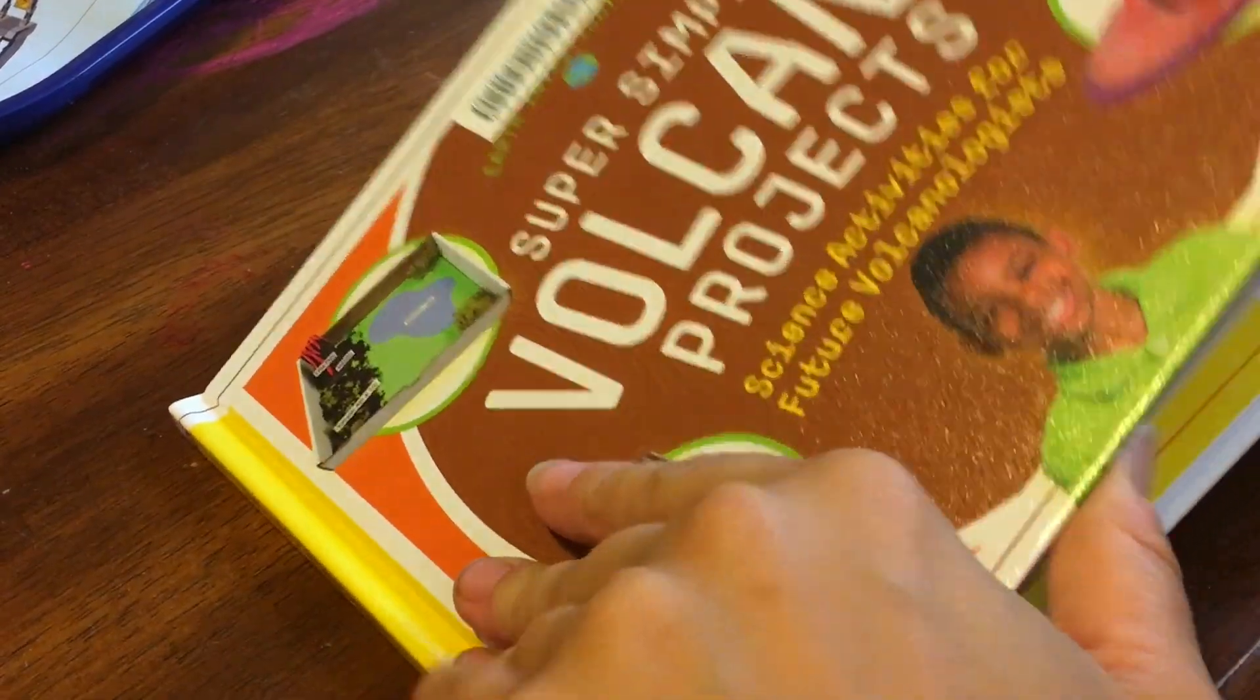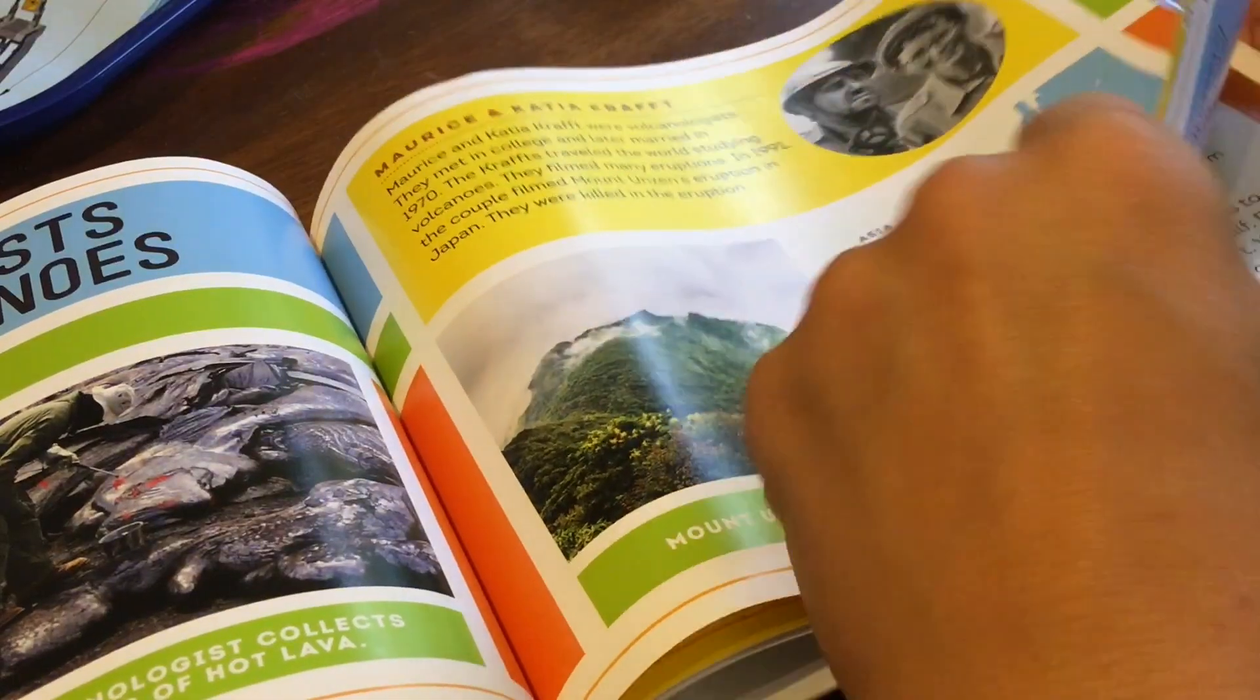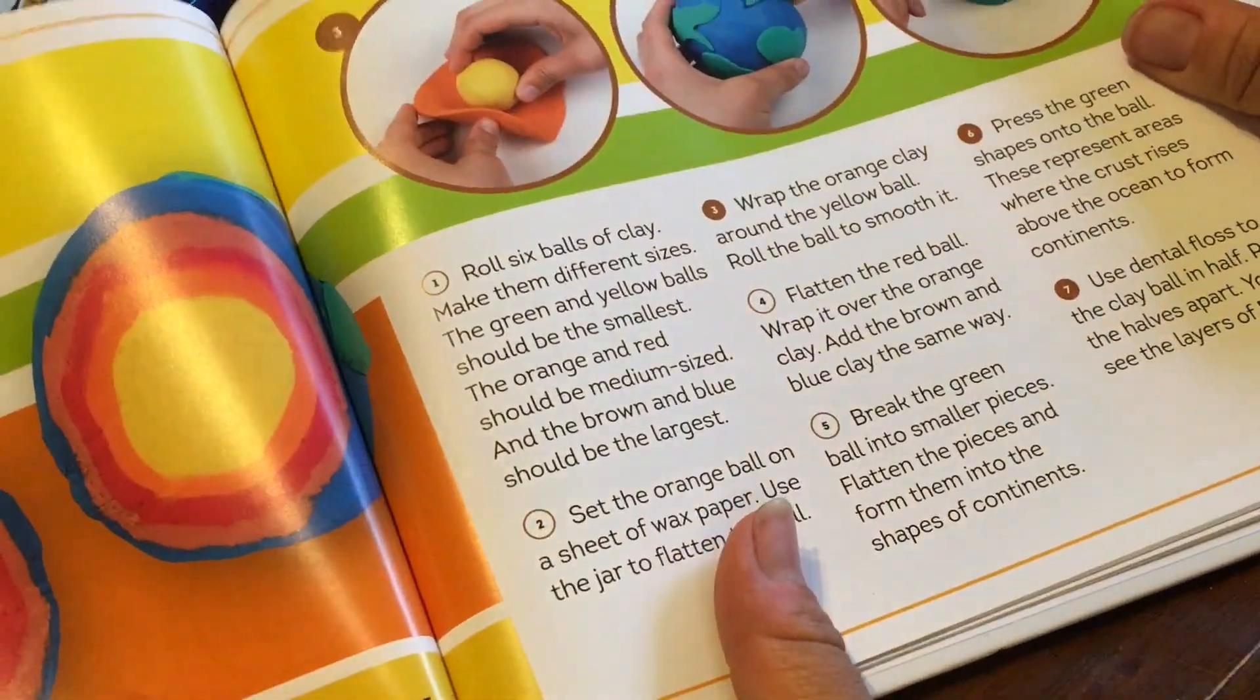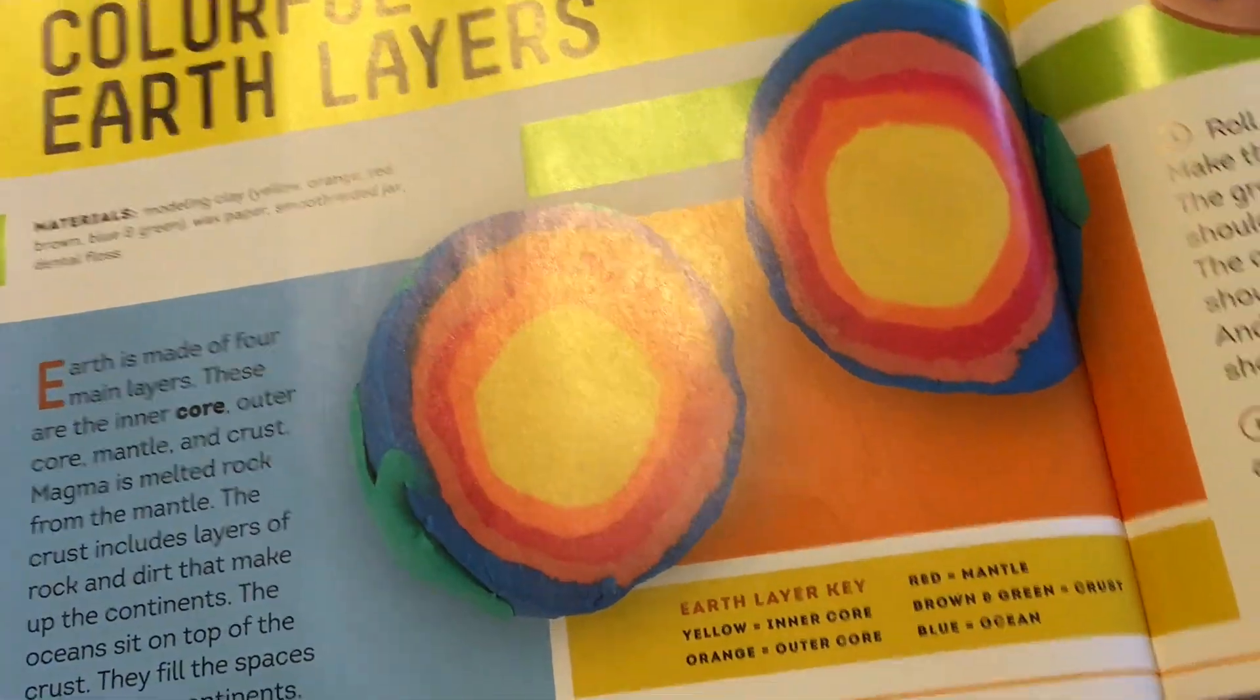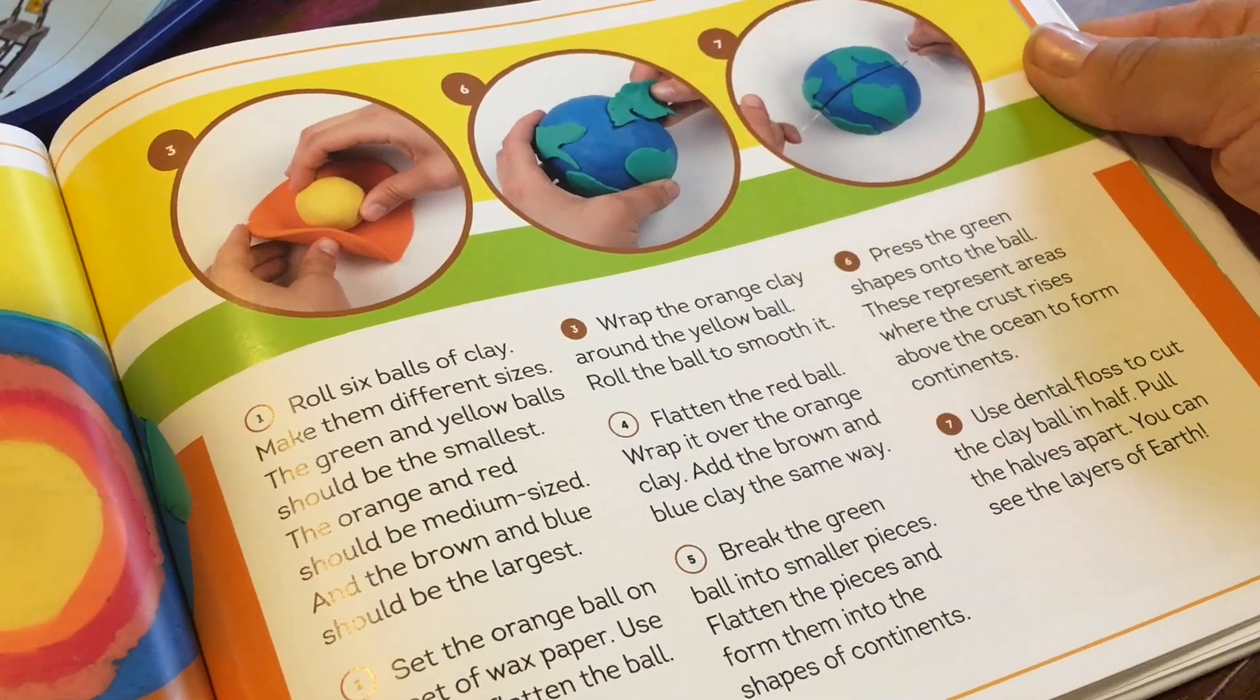Hello everybody, this is Robin from Our Wild Way, and today we are going to do a clay project that shows the layers of the earth. This is a super simple, fast project that you can do with your kids.